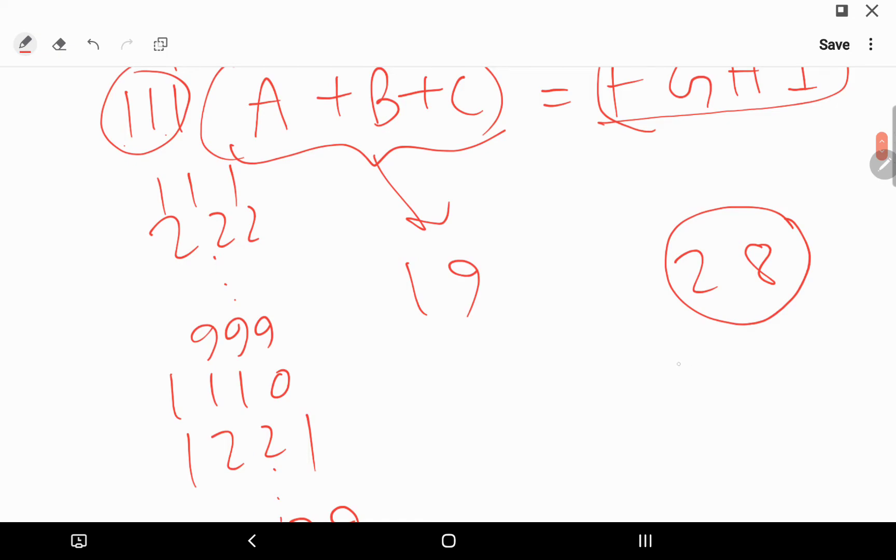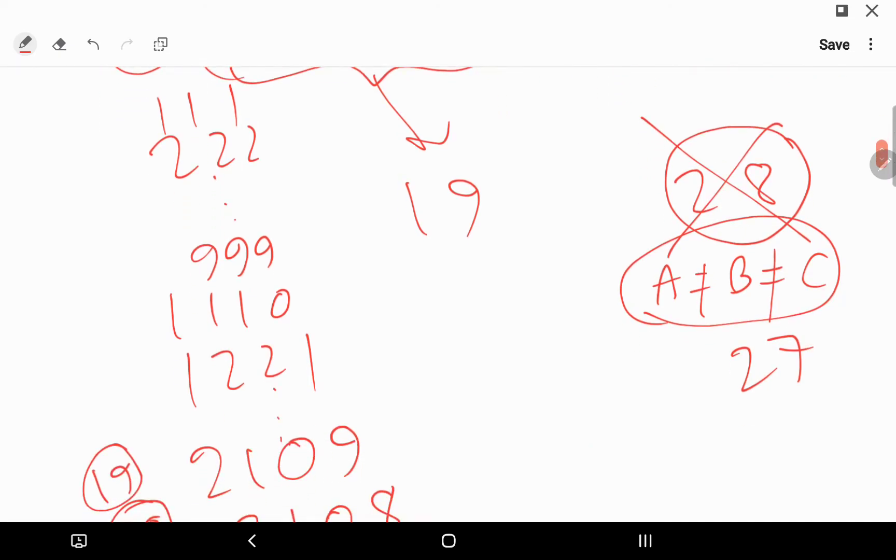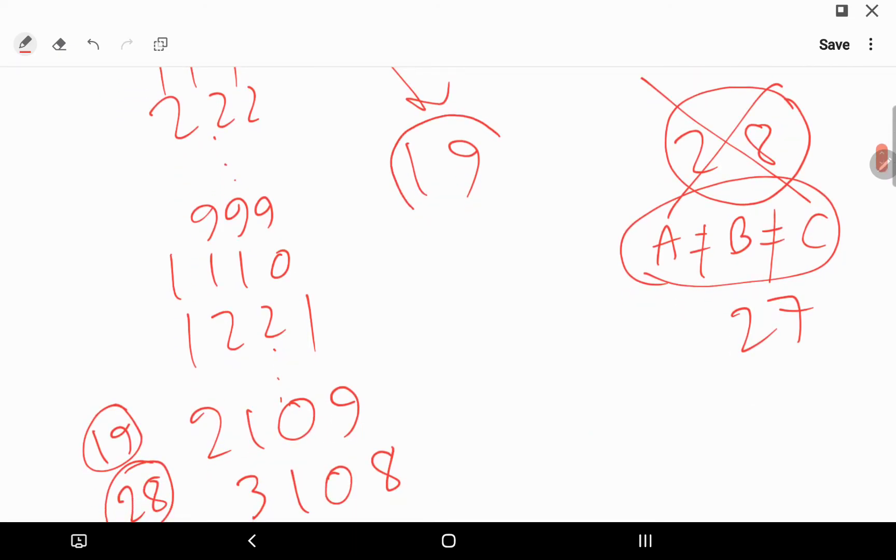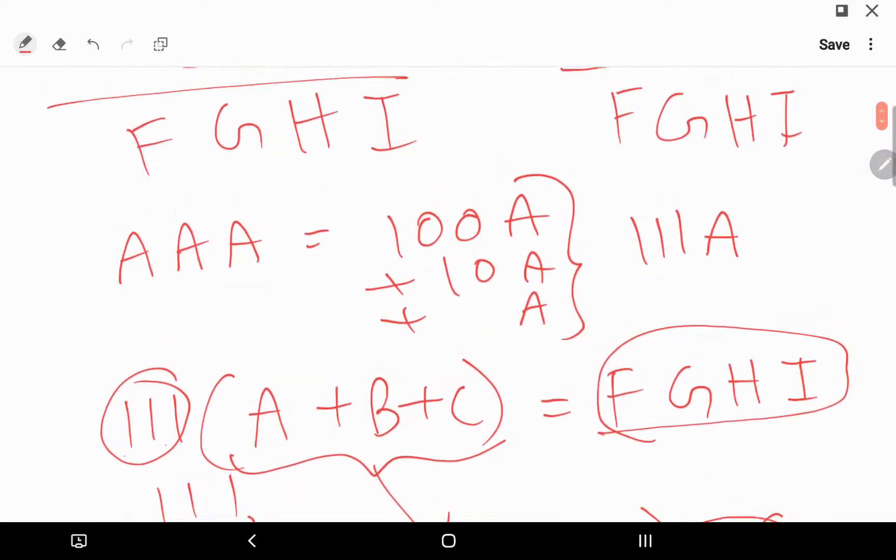Now 28 is impossible because maximum when A equals B equals C, though it is given that A not equal to B not equal to C, even if they are equal, maximum can be 27. So 28 is out of question and anything beyond that is out of question.